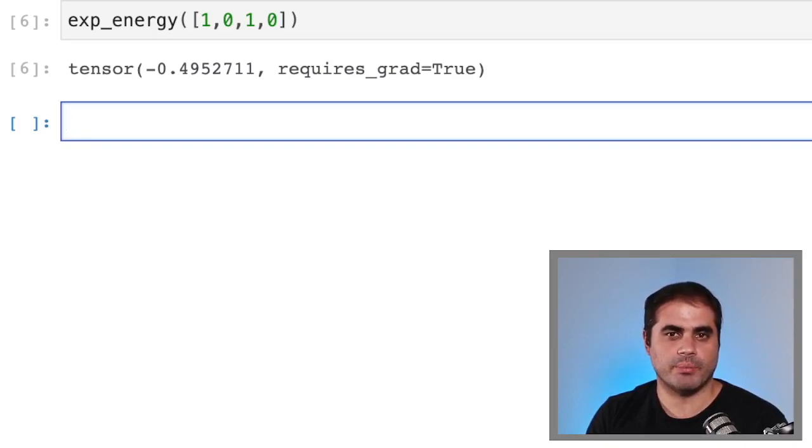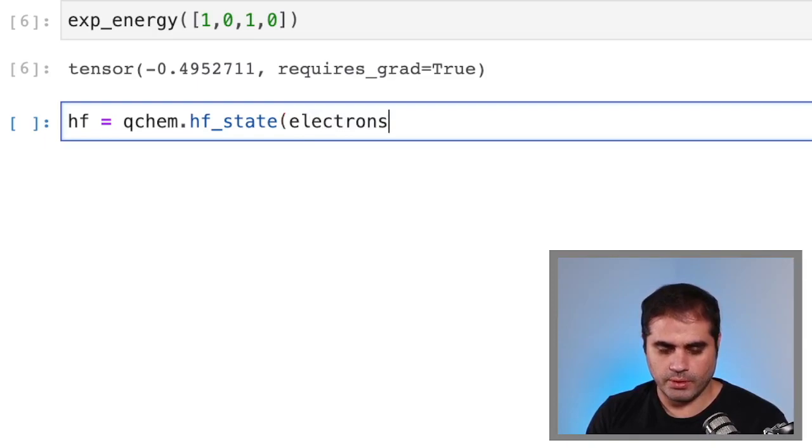Such a state is known as the ground state. Or in the case of the Hartree-Fock approximation, it is known as the Hartree-Fock state.